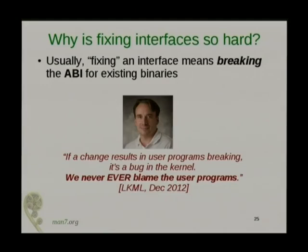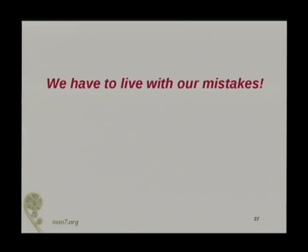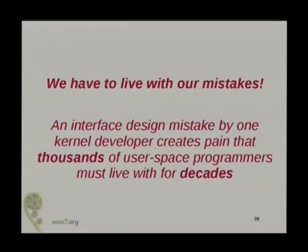It seems like Linus says this almost every week lately, some version of: "We don't break user space." It's actually worth emphasizing that he says we don't break user space — he doesn't say we don't change the ABI, because sometimes we actually do in ways that are incompatible. But as long as something doesn't break, we're good. My main point is: when you do something in terms of an API, whatever it is, we have to live with it, including the mistakes. An interface design mistake can create pain for thousands of user space programmers for decades. The example I had was a 30-year-old decision that we live with to this day because the Sockets API is so widely used.